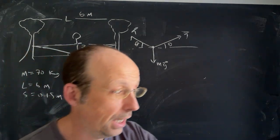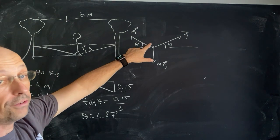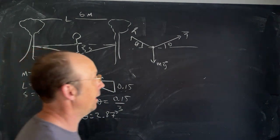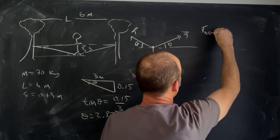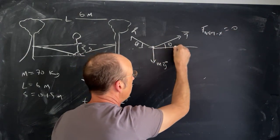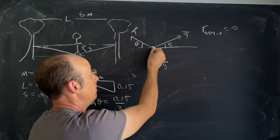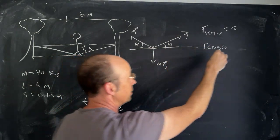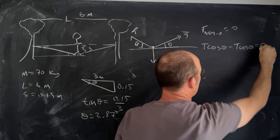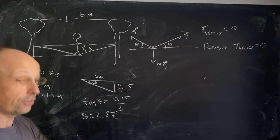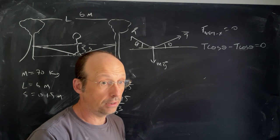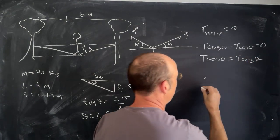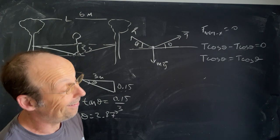Now I can apply Newton's second law. This is a case where acceleration is zero. For the x-direction: F_net_x = 0. I have a tension component T cosine theta pulling right and T cosine theta pulling left, so T cosine theta minus T cosine theta equals zero. There's only one variable but I cannot solve for tension — I just get T equals T, which is true but not useful.